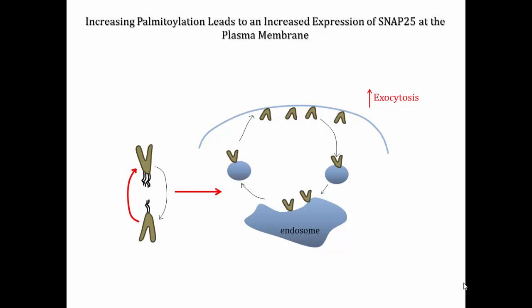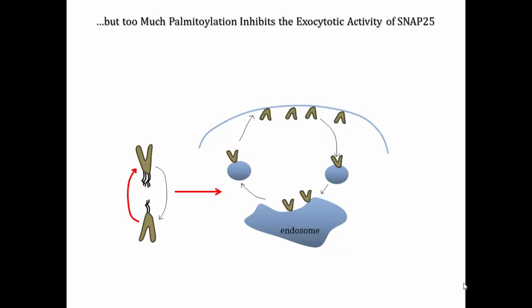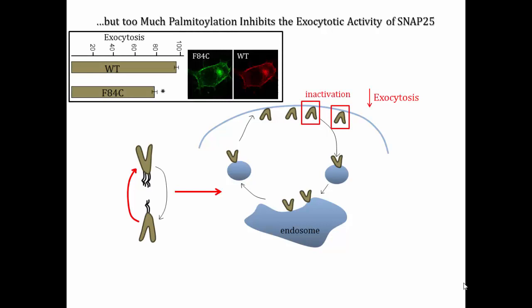On the other hand, increasing SNAP25 palmitoylation leads to enhanced plasma membrane association and a resulting increased capacity for exocytosis. However, other work from our lab has suggested that increased palmitoylation may also inhibit SNAP25 function in exocytosis, as this increased palmitoylation leads to a movement of SNAP25 into cholesterol-rich lipid raft domains, which down-regulate the exocytotic activity of SNAP25. This point is highlighted in the top left figure, showing that a hyper-palmitoylated mutant of SNAP25, F84C, supports less exocytosis than the wild-type protein.